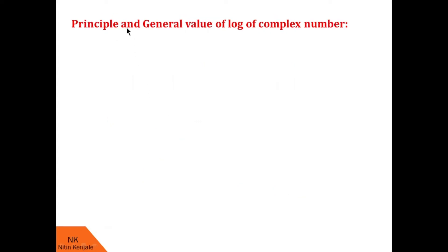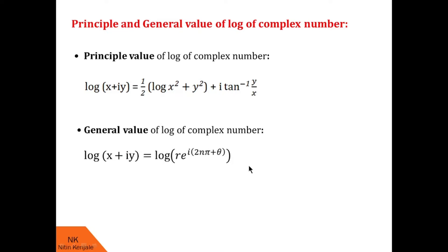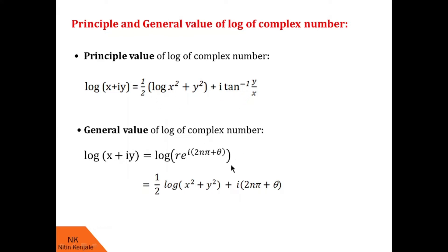Now let us see what is called the principal and general value of log of a complex number. The formula we just derived for log(x + iy) is called the principal value of log of the complex number. For the general value, we recall that since sine and cosine are periodic functions of period 2π, we can write the polar form as r·e^(i(2nπ + θ)). Then log(x + iy) = (1/2)·log(x² + y²) + i(2nπ + θ), where θ = tan⁻¹(y/x). This is called the general value. You can use either as per your requirement.